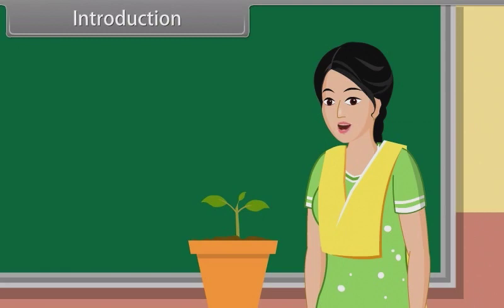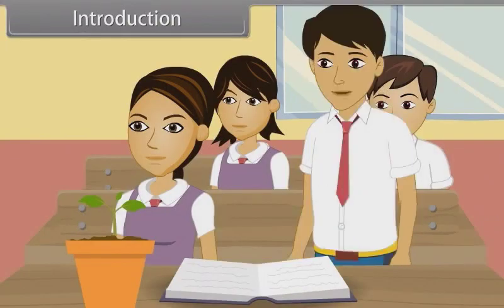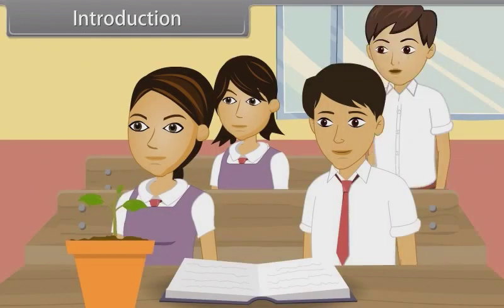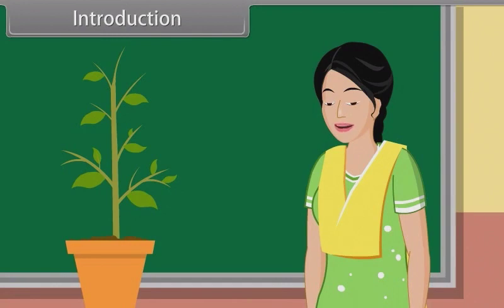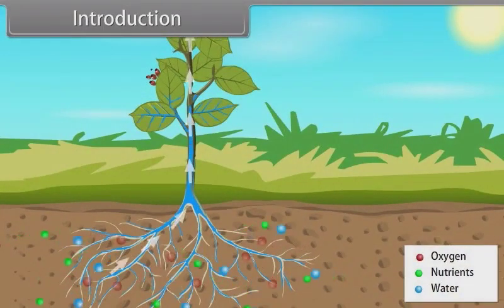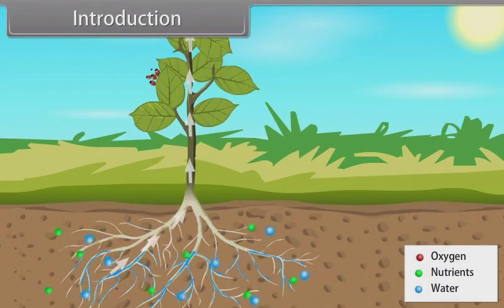Who will tell me what is growth in plants? Ma'am, increase in the size of the cell and elongation in them signifies the growth of plant. Very good, Suresh. Ma'am, can we measure the growth of plants? Good question, Rahul. Yes, we can. The growth of a plant can be measured by considering various factors such as nutrients availability, water availability, oxygen, etc.